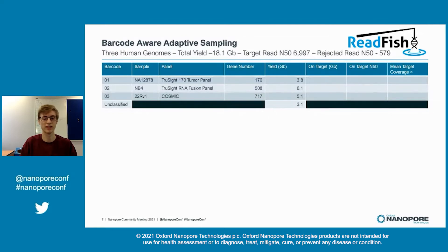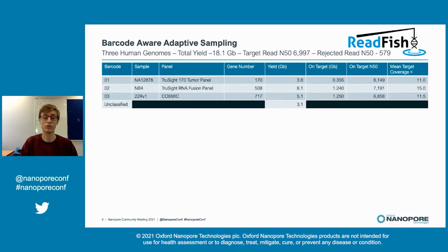In total, we had a yield of 18 gigabases, and overall an on-target N50 of roughly 7 KB. Our rejected reads had an N50 of 579 bases, which is roughly 1.2 seconds of data. For barcode 1, our on-target yield was 0.355 gigabases with a mean target coverage of 11X. The yield for barcodes 2 and 3 was better, reaching 1.24 and 1.25 gigabases respectively, with mean on-target coverage of 15 and 11.5X respectively.